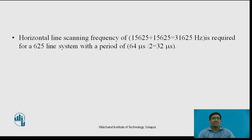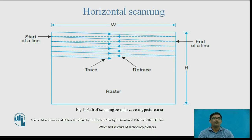The horizontal line scanning frequency required for a 625-line system has a period of 64 microseconds; 1 divided by 2 is equal to 32 microseconds. Before going to interlaced scanning, we want to first understand what is meant by horizontal scanning and vertical scanning.